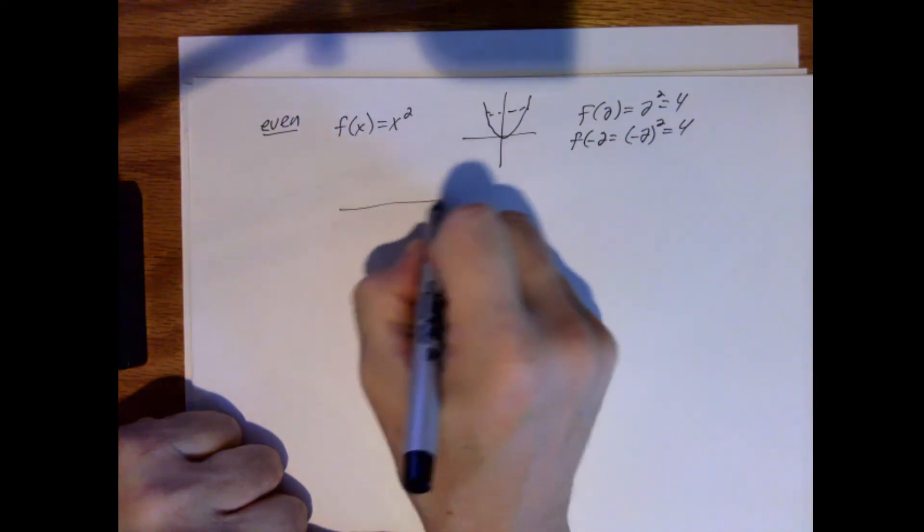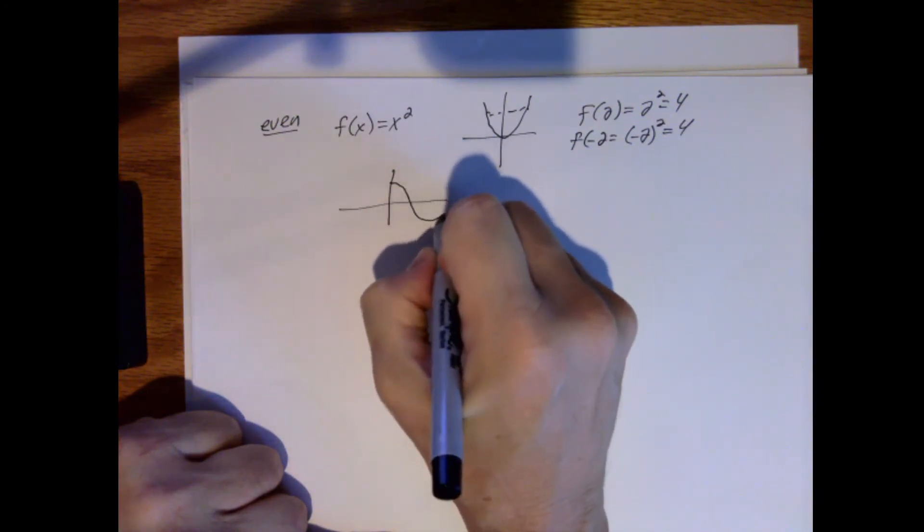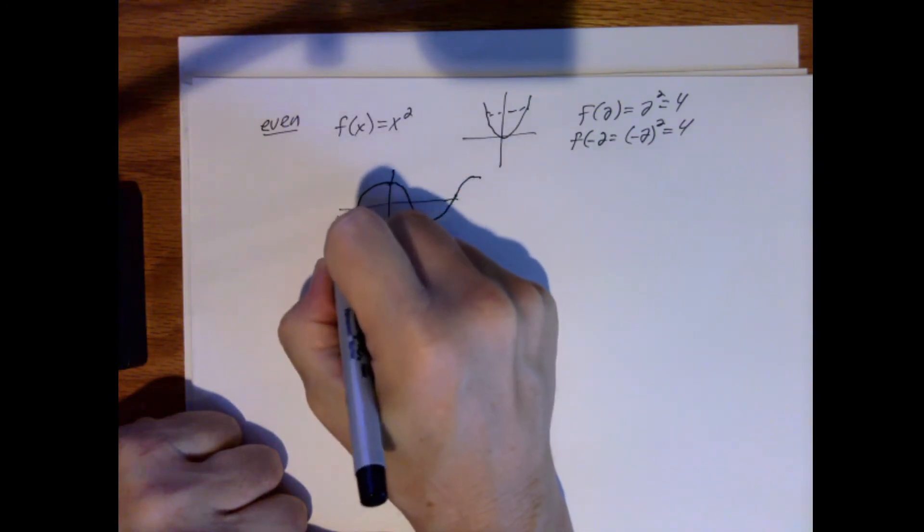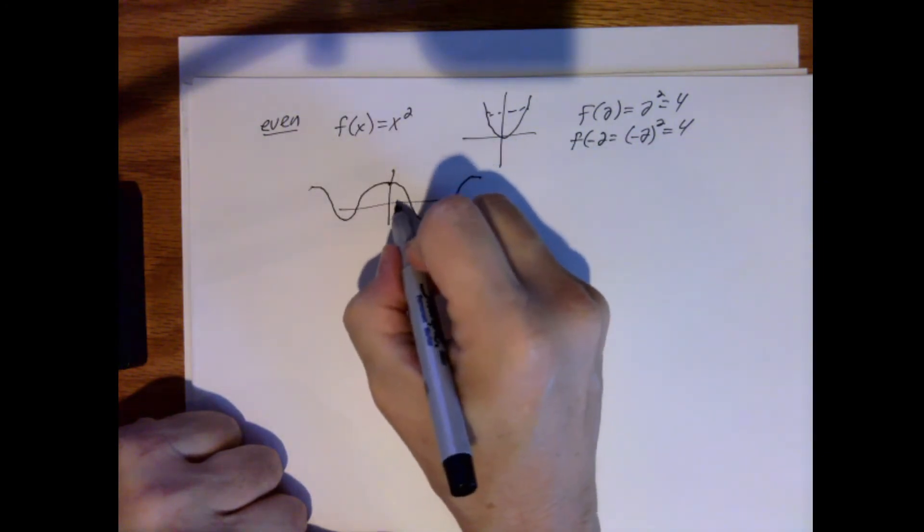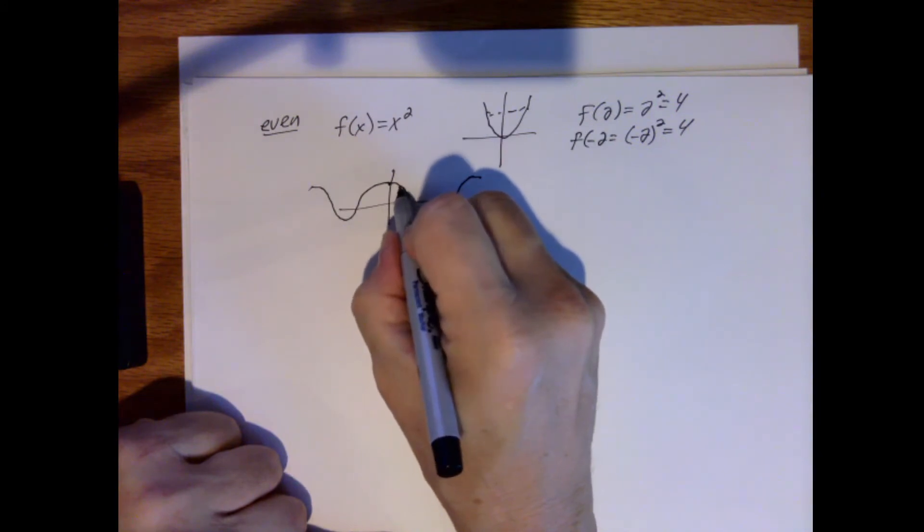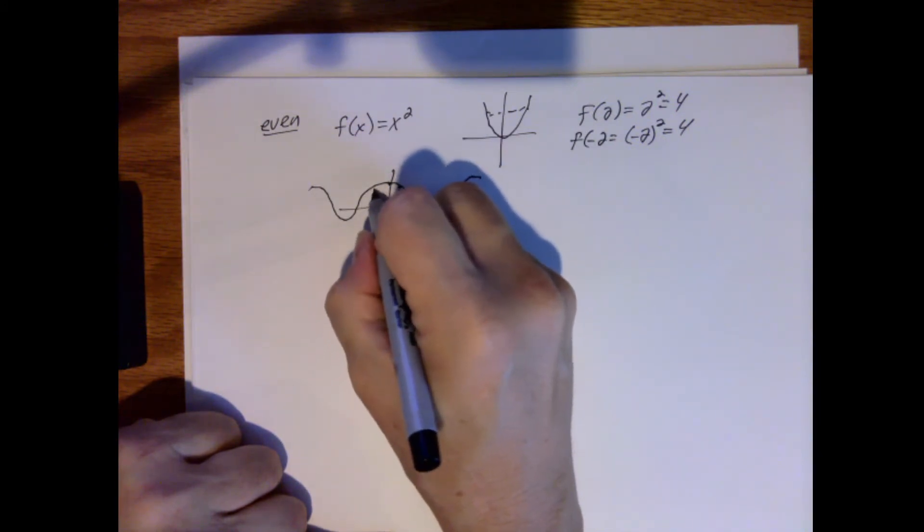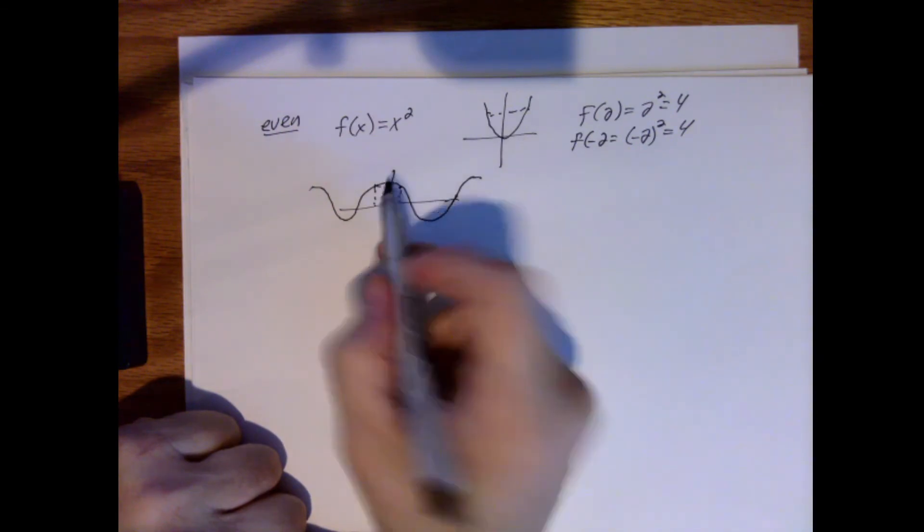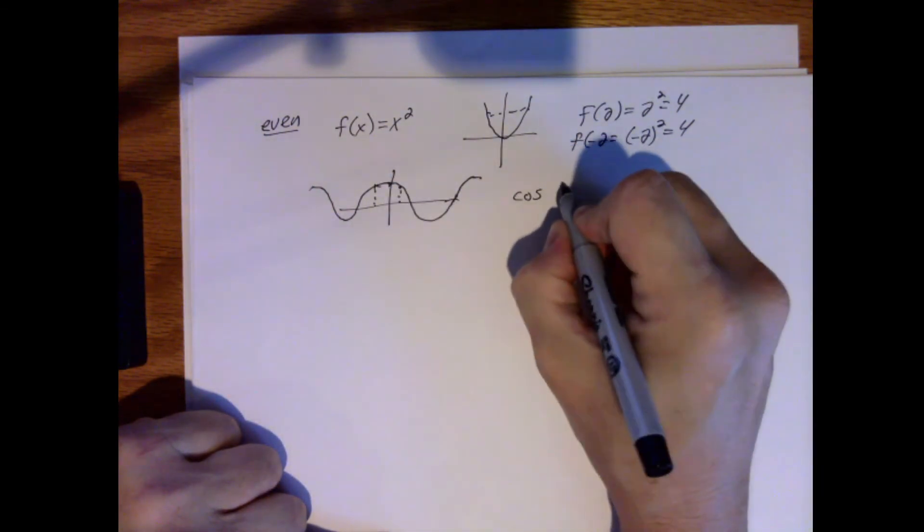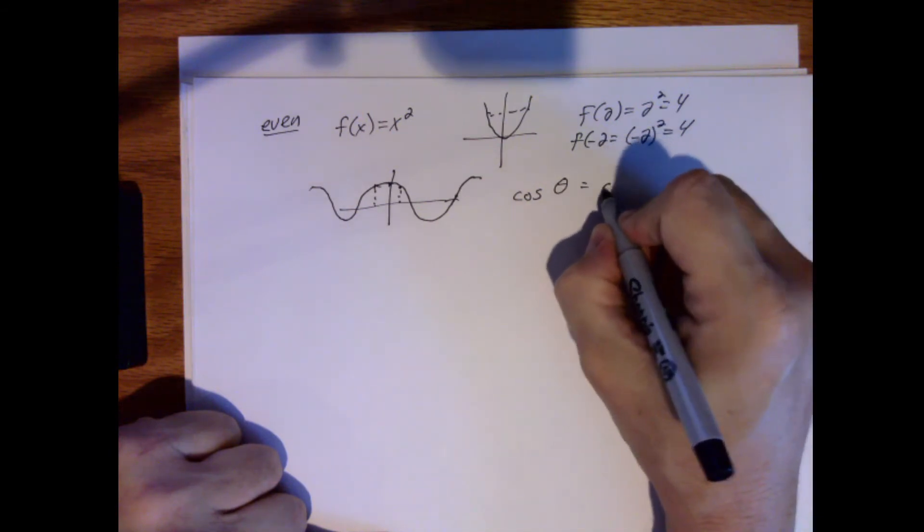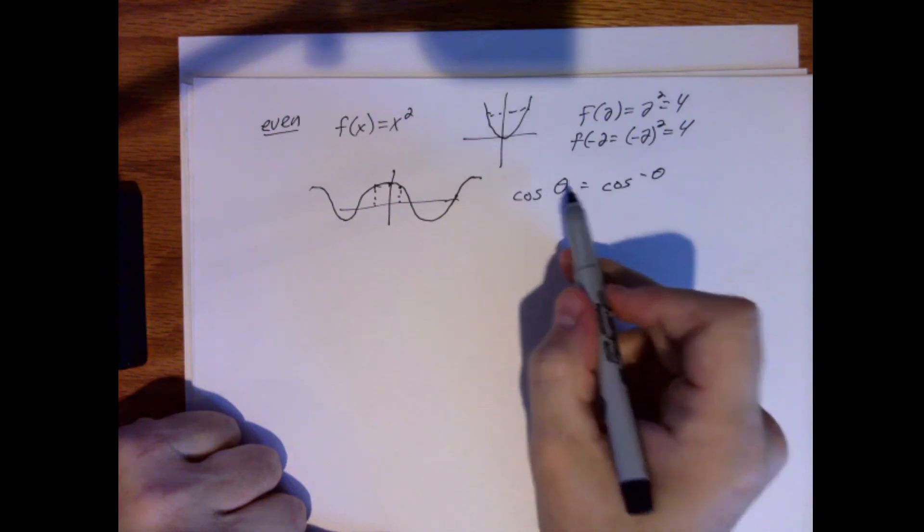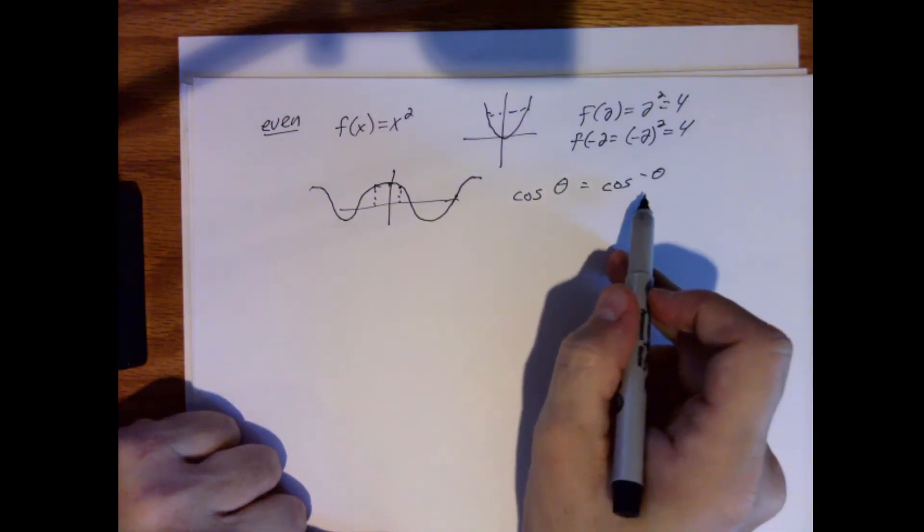And so cosine, which looks like this, if I were to come over to here to say pi over 4 radians, or here to minus pi over 4 radians, I still get the same height. So that's why we said cosine of theta is equal to cosine of minus theta. Cosine of pi over 4 is equal to cosine of minus pi over 4.